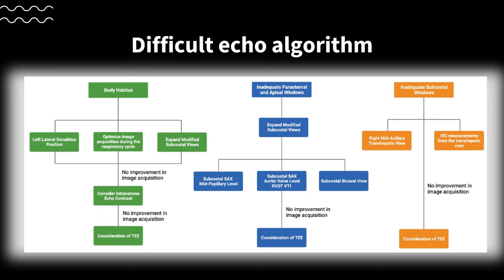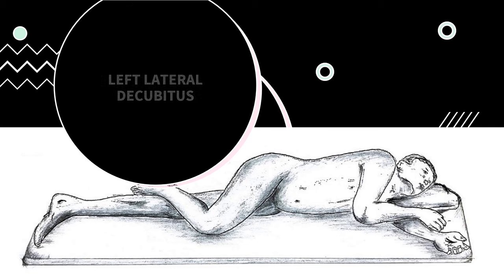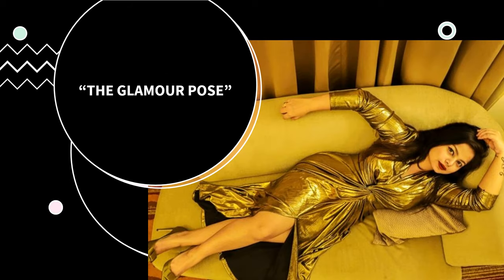We'll start with the first column labeled body habitus. If you have a patient with large body habitus and difficult sonographic windows, one of the easiest ways to improve your images is to place the patient in the left lateral decubitus position. The first maneuver I perform on anyone with poor parasternal windows is to place them in the glamour pose — a modified left lateral decubitus position ideal for echo. You'll roll the patient partially onto their left side, bringing the heart closer to the chest wall and creating enough room for your transducer to fit at the apex. The left arm is above the head, which slightly opens up the rib spaces for a better sonographic window.